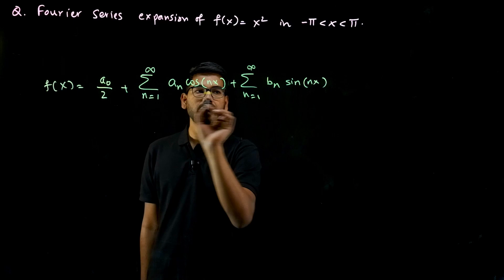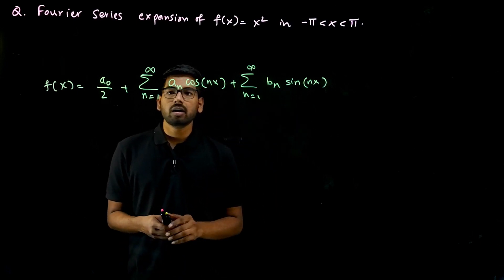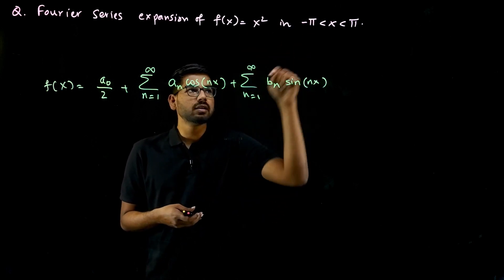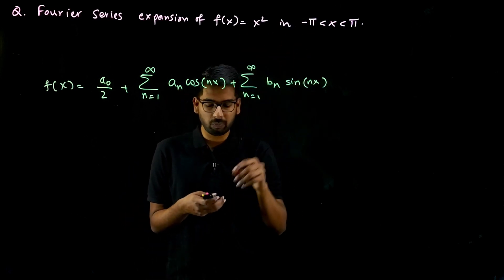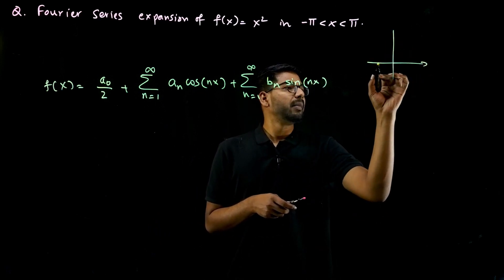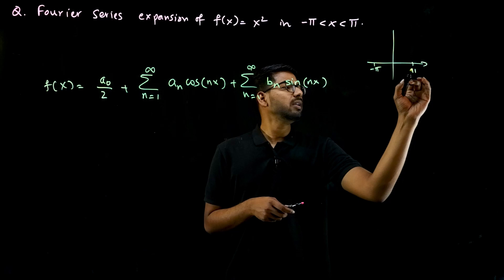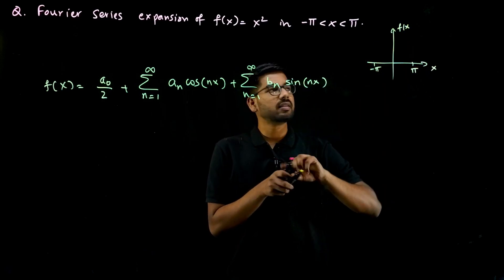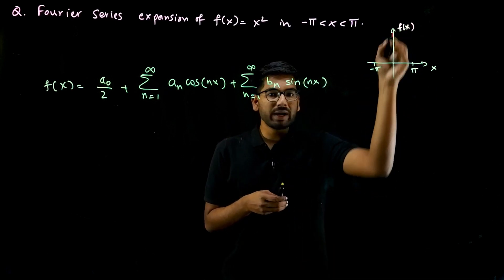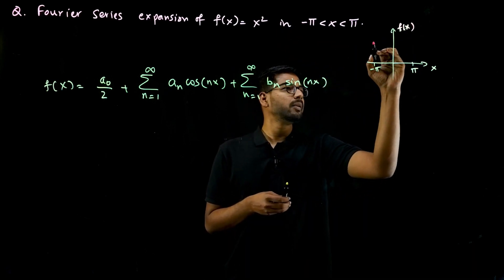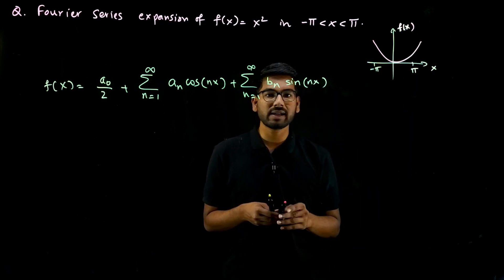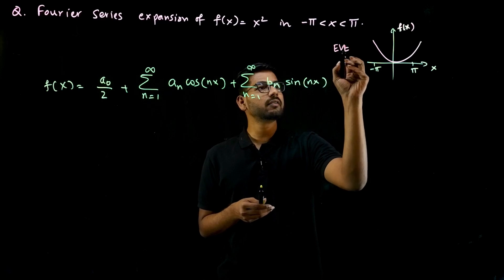We need to find a naught, aₙ, and bₙ, and these depend upon f of x. In this case f of x is given in the interval minus pi to pi. If you draw the graph, minus pi will be here, pi will be here. The function exists on either side of the y-axis and f of x equals x squared. If you draw the graph it is symmetric with respect to the y-axis, so such functions are called even functions.